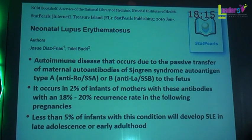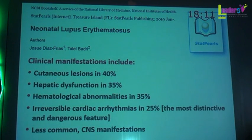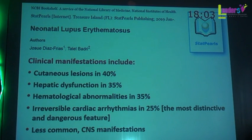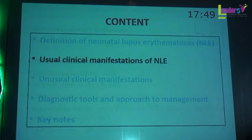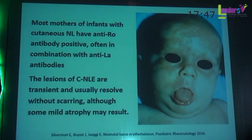The most important autoimmune disease is systemic lupus erythematosus. Cutaneous lesions occur in 40% of cases, hepatic dysfunction in 35%, hematological abnormalities such as thrombocytopenia in 35%, but the most important, fatal, and dangerous is irreversible cardiac arrhythmias in 25%, in the form of congenital heart block, and less commonly CNS manifestations.